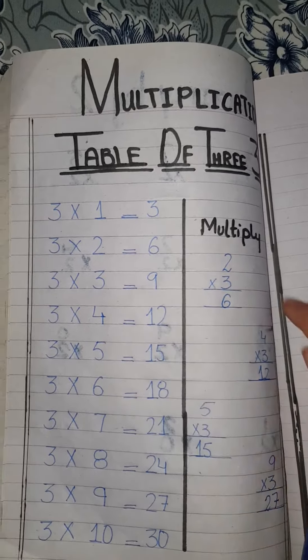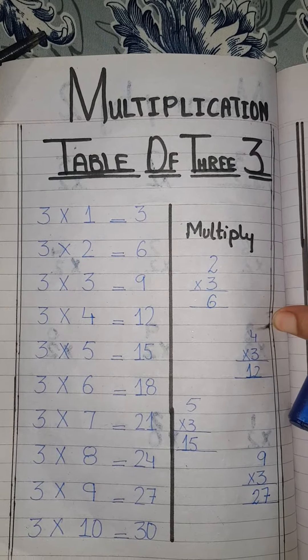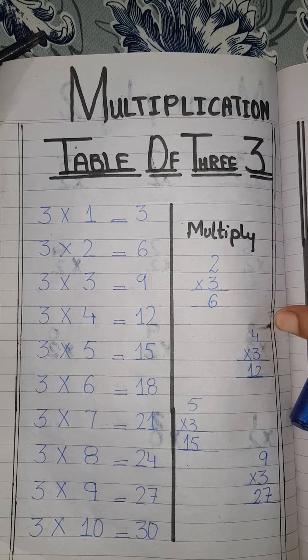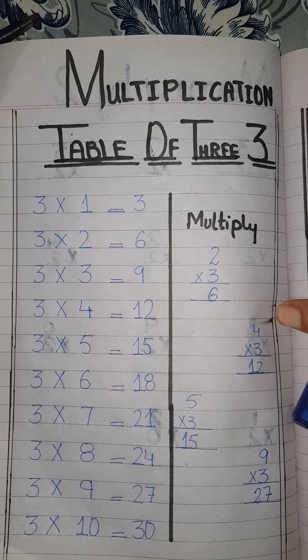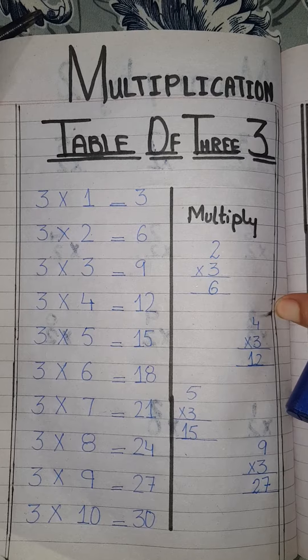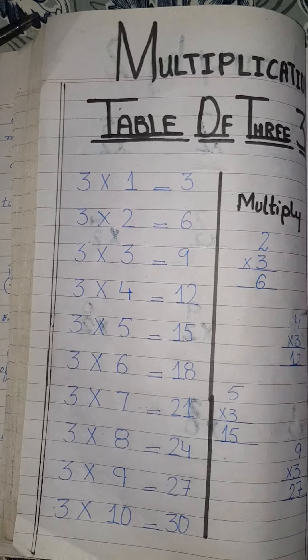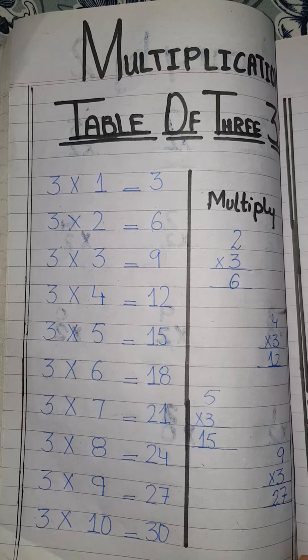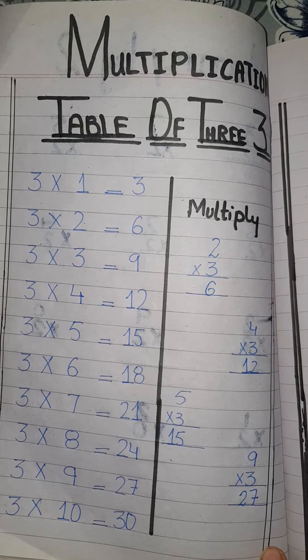This is an easy video for your children so that they can practice. The table of 3 is very important for multiplication. When the tables are not memorized, multiplication will not come easily to the kids. I hope you liked this video. Like and subscribe, don't forget.